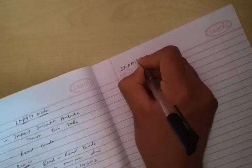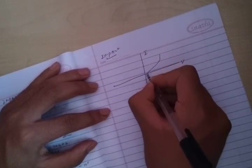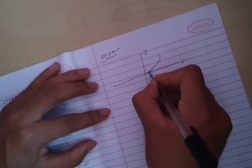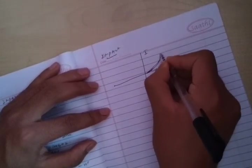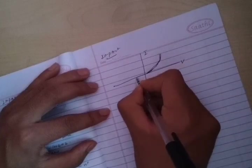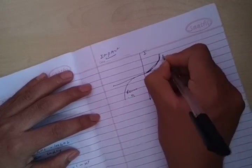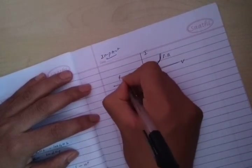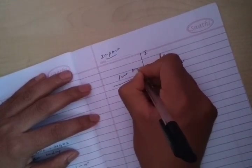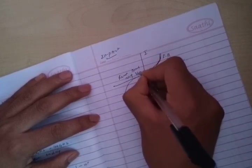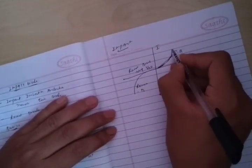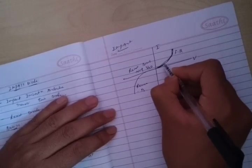Now IMPATT diode characteristics. Let's have a graph: this is I and this is V. Its characteristic graph is like this. This is reverse bias, this is forward bias, and this is reverse breakdown voltage, which we can also call VB. When it is in forward bias, it conducts like a normal PN junction diode.